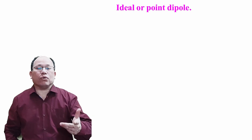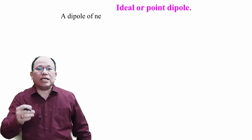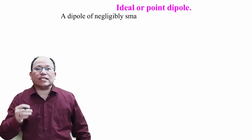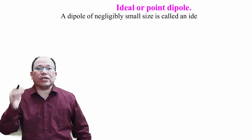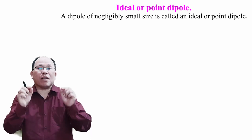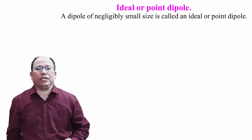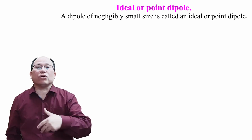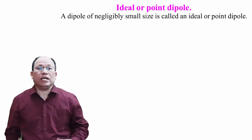Let us come to the next topic: ideal or point dipole. A dipole of negligibly small size is called an ideal or point dipole. The size of the dipole is almost negligible, hence it is called a point or ideal dipole.